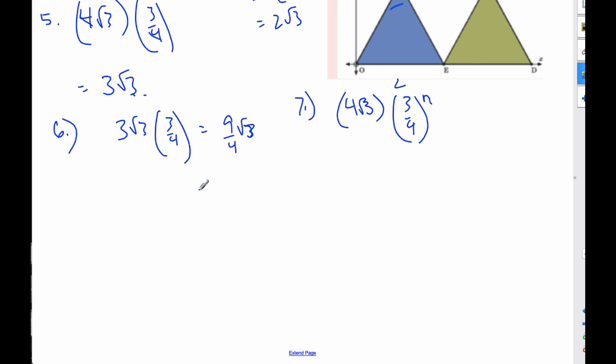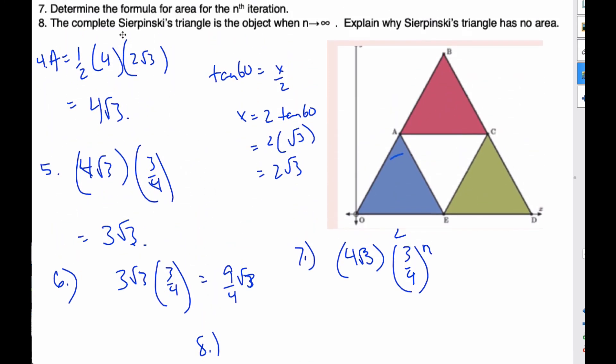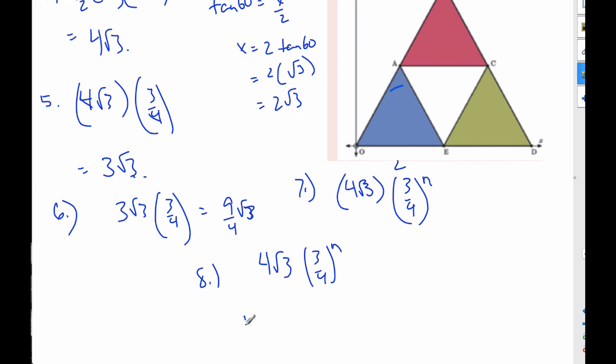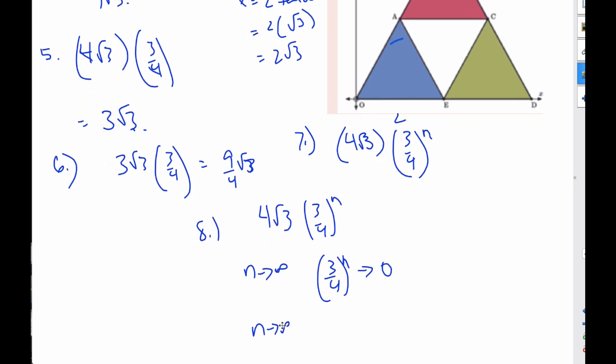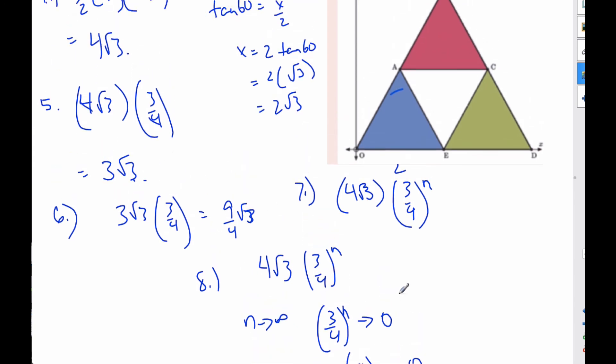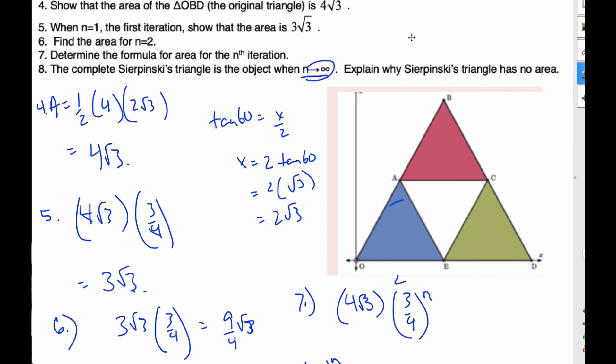And so finally, question 8 says the complete triangle, when n goes to infinity, explain why the triangle has no area. Well, if this is my area, I know that as n goes to infinity, then 3 to the power n—if this gets really, really big, this goes to 0. So as n goes to infinity, this is 4√3 times 0, which is 0. And so the area of Sierpinski's triangle, when you do infinite iterations, is actually equal to 0.